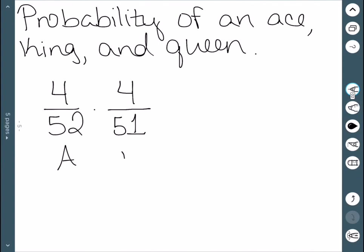So here's our ace and our king. For the queen, we've removed two cards, so we're down to 50 cards, but there are still four queens since we haven't removed any of those. Once we multiply this,